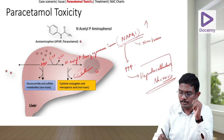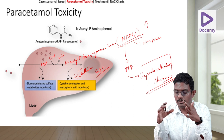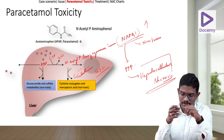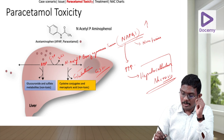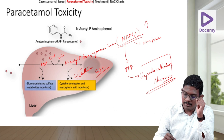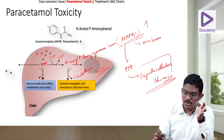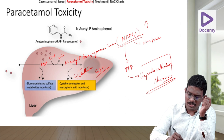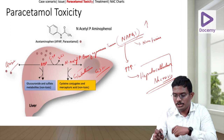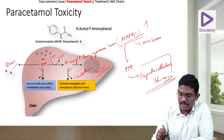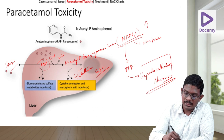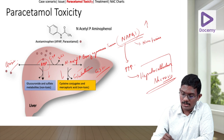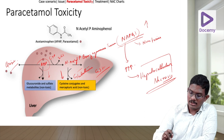Glutathione, via the GSH pathway, converts NAPQI into cysteine conjugates and mercapturic conjugates, which are non-toxic and can be excreted through urine and feces. If acetaminophen doesn't reach NAPQI levels, it can be directly converted into sulfate or glucuronide metabolites and excreted through feces or urine. So if we don't allow acetaminophen to exceed prescribed values, it can be safely eliminated from the body.